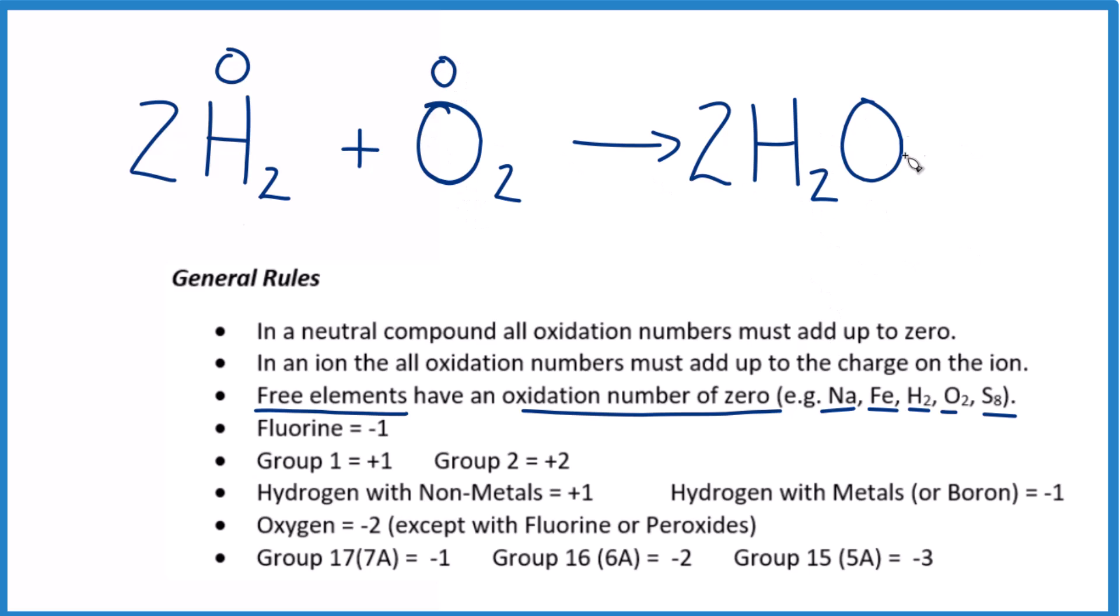Now for water, these atoms are bonded together into a molecule, so they're not free elements. We have H2O. We can look at hydrogen - when hydrogen's with a nonmetal, oxygen's a nonmetal, hydrogen is going to be +1. Oxygen is almost always -2 with a few exceptions. You can see two times +1 equals +2, so that balances out the -2.